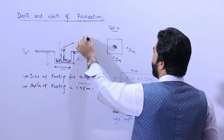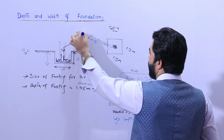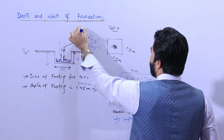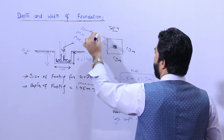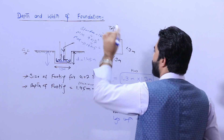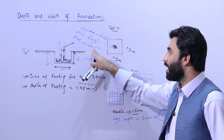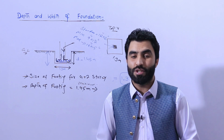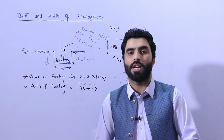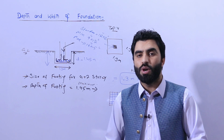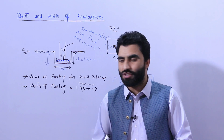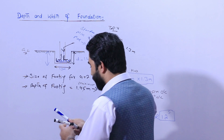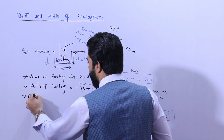For a G plus one story, the column size should not be less than 9 by 12 inches — that is the minimum. The maximum size is 12 by 15 inches. The standard recommended size is 12 by 12 inches for a normal residential building. For steel reinforcement inside the column, provide six numbers of steel rods, diameter not less than 12 millimeters. Lateral ties diameter should not be less than 8 millimeters, with spacing of 6 inches, and hooks at 135 degrees. Use M20 grade concrete.